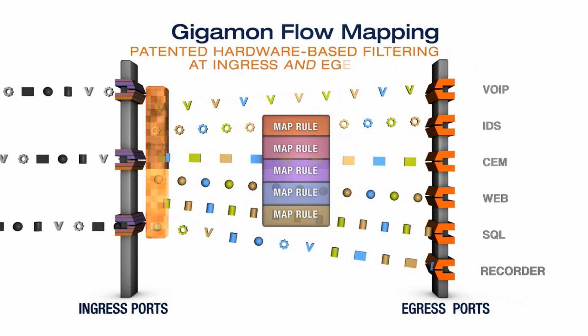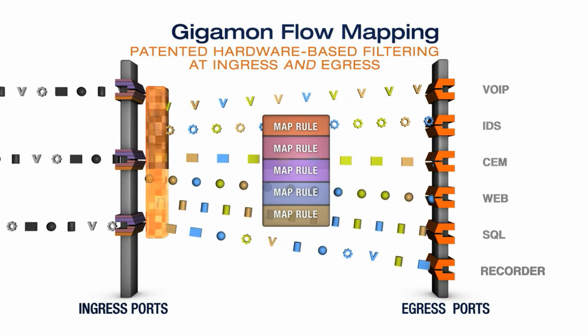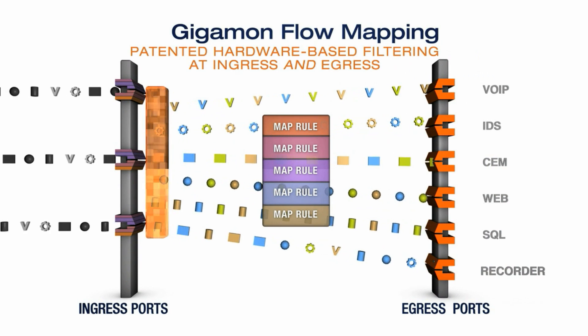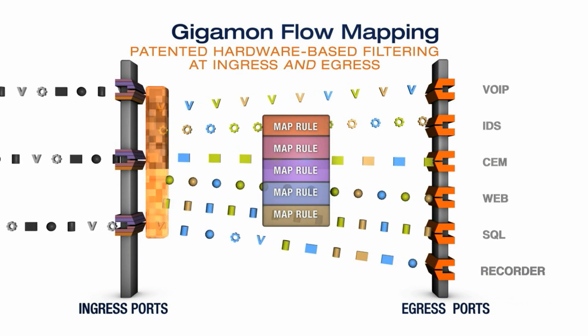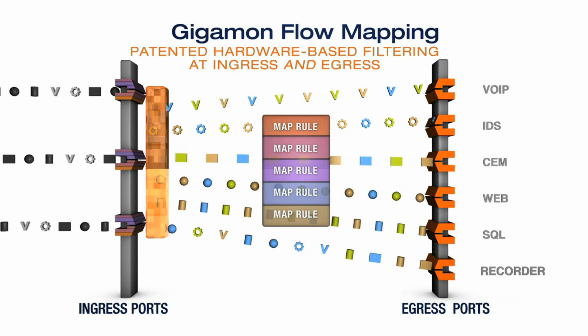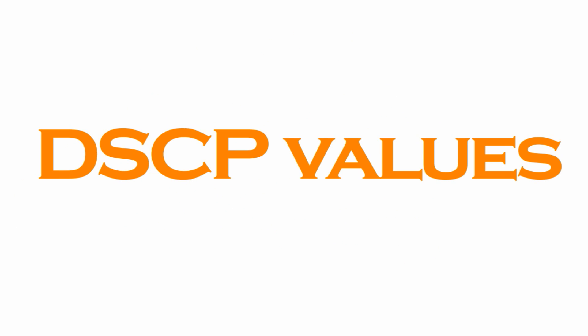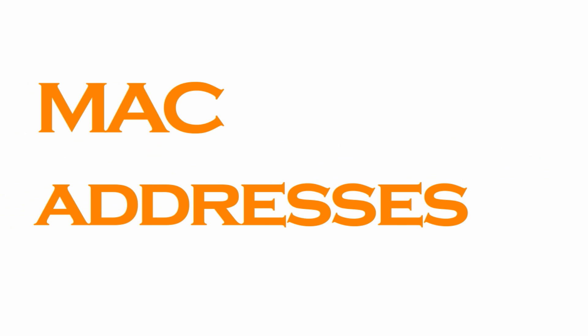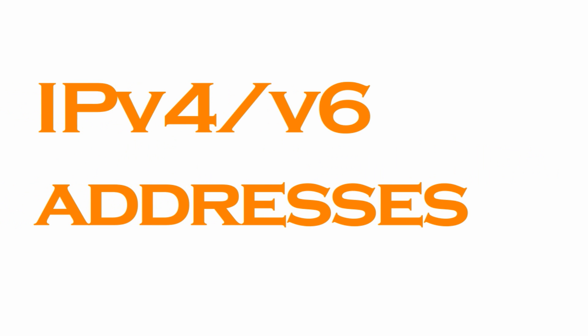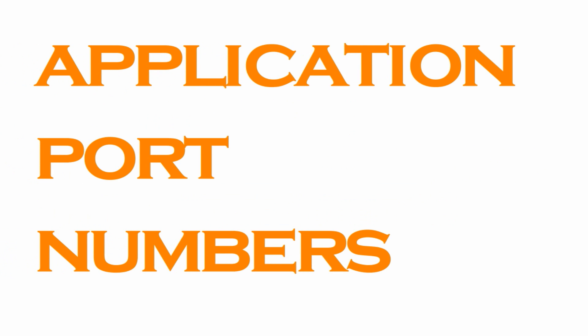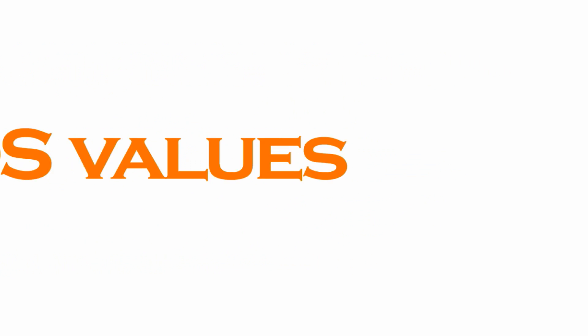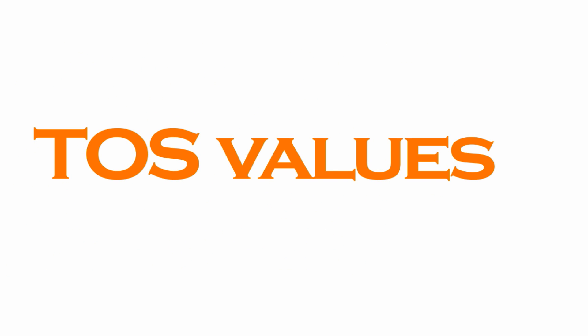Flow mapping starts with network ports and ends with tool ports. Users can include or exclude traffic based on a variety of criteria such as DSCP values, MAC addresses, IPv4, V6 addresses, application port numbers, Ether type, VLAN IDs, protocols, TOS values, and many more.